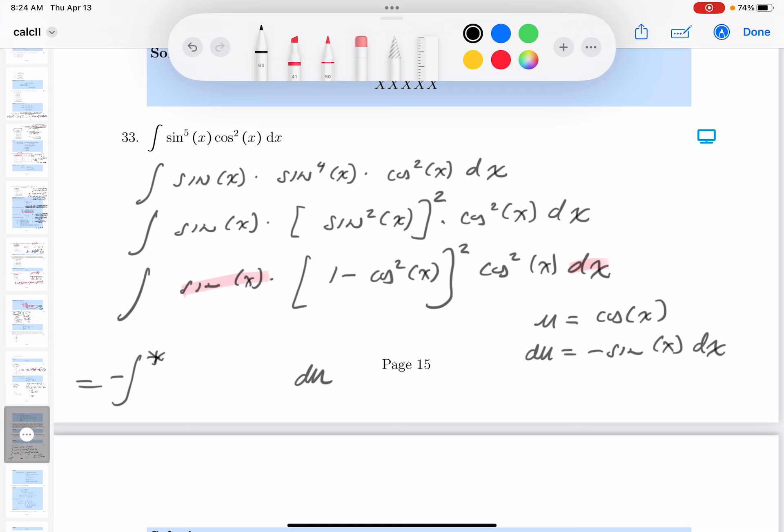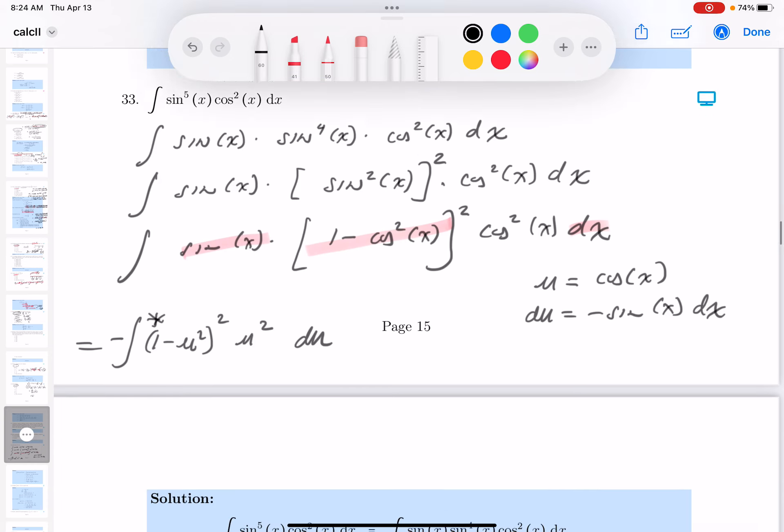Then when I get, I get 1 minus u squared, squared. I just took care of this. What else do I see? I see u squared. Let's figure it out.